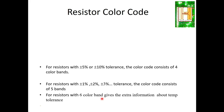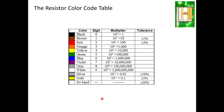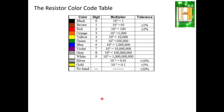Before learning how to decode the resistor color code, we should know the color code table. Starting with black, brown, red, orange, yellow, green, and up to white — each color has a different digit. Black is zero, brown is one, red is two, orange is three, and so on up to white which is nine.